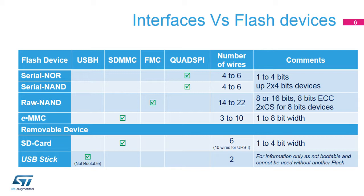eMMC memories can be connected to any of the SDMMC interfaces. SDMMC 3 has only 4 data bits. eMMC devices support 1, 4, or 8-bit data width. STM32MP1 series can boot from eMMC memory connected to the SDMMC 2 interface. SD cards can be connected to any of the SDMMC interfaces. STM32MP1 series provides optional control for an external level shifter, mandatory for the support of UHSI mode, which requires 3 volts then 1.8 volts signaling. The STM32MP1 series can boot from an SD card connected to the SDMMC 1 interface.